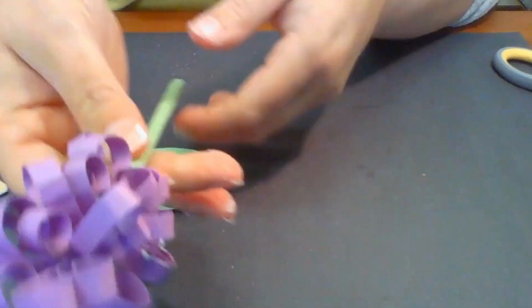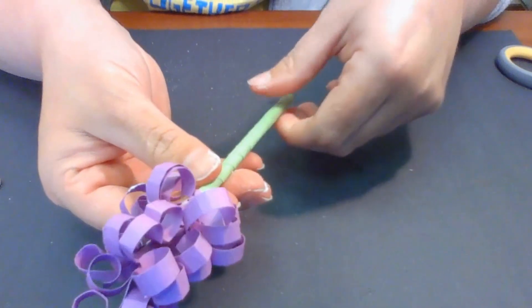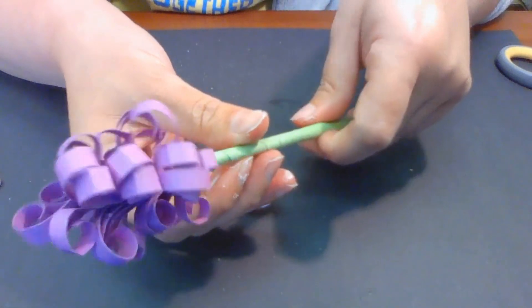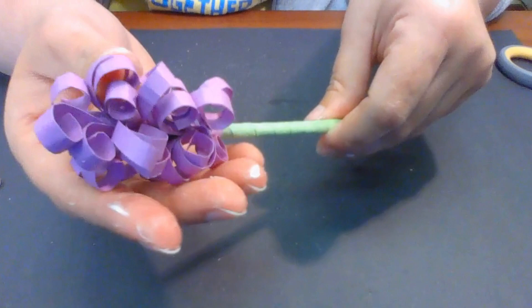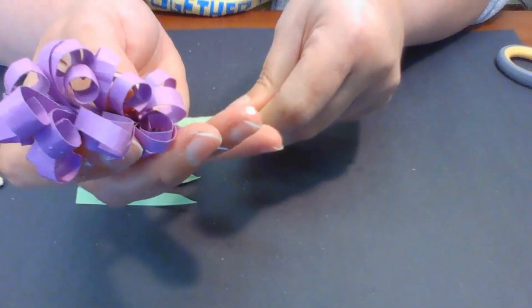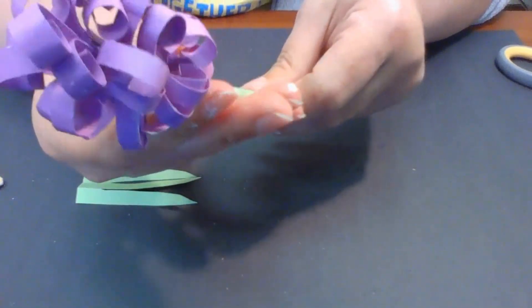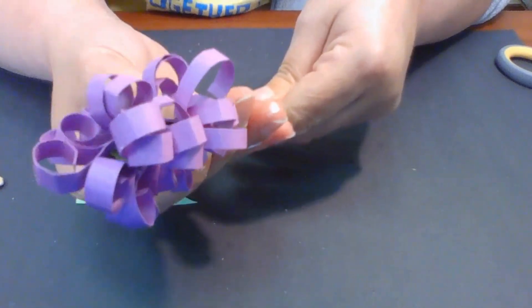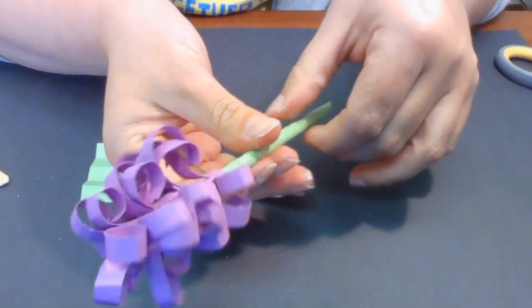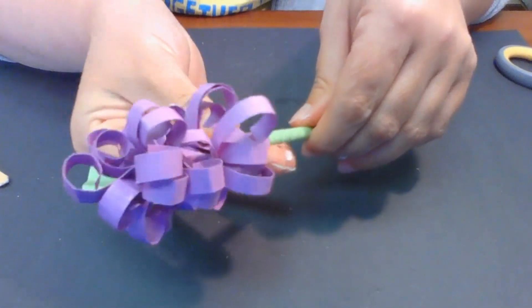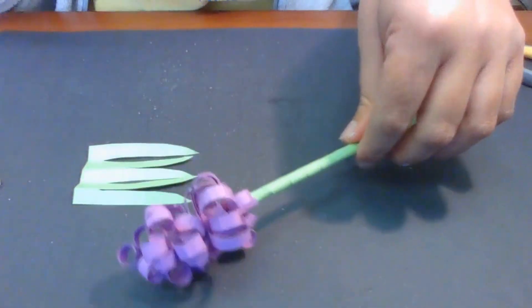So you have a nice little flower. You could spread them out a little more if you feel like you need to. It's whatever you'd like it to look like. Make sure you have it glued down well.